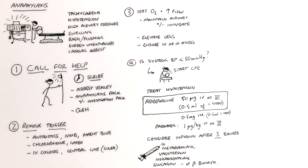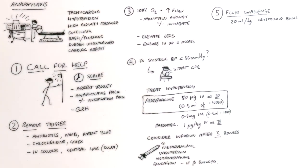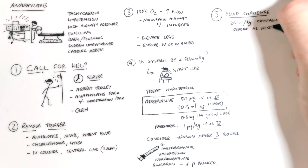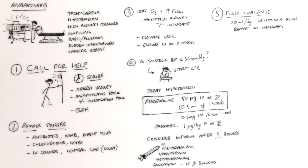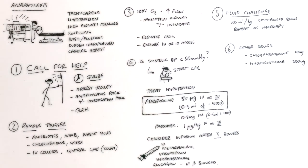Having given your first dose of adrenaline as a priority, you can then give them a fluid challenge of 20 mils per kilogram and repeat as needed to improve the blood pressure and then consider your other drugs for anaphylaxis such as chlorphenamine and hydrocortisone.